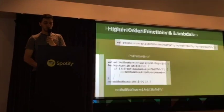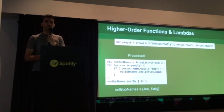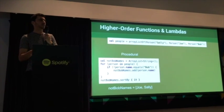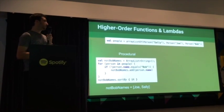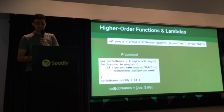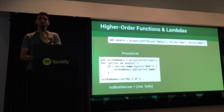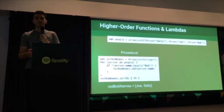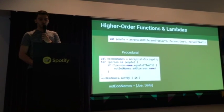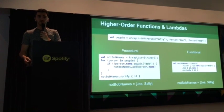Let's say we have a list of people objects and we want to extract all of their names, sort them, and exclude anyone named Bob. Procedurally, you'd create a new list, iterate, do your if statement, add the name, and then sort. We can do the same thing in Kotlin with a more functional paradigm: calling filter on the list and passing in a lambda.